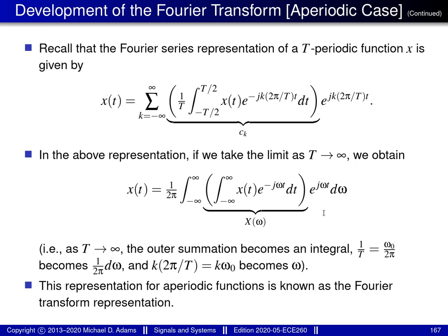Now we can take this equation and split it into two smaller equations. We can take the portion of the equation labeled as X(ω) and write this as a separate equation: X(ω) equals the inner integral, the integral inside the large pair of parentheses. Then for the second equation, we replace everything inside the parentheses with X(ω). It turns out that in the equation X(ω) equals this inner integral, the quantity capital X is called the Fourier transform of the function little x. So essentially this inner integral defines the Fourier transform of little x.